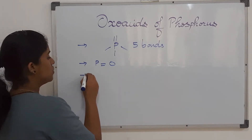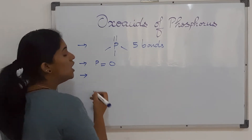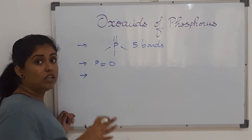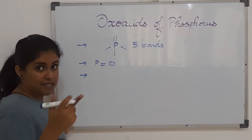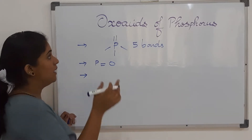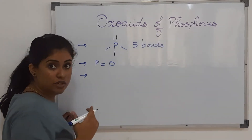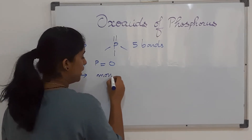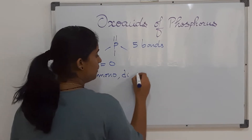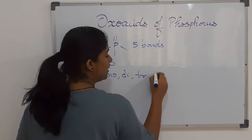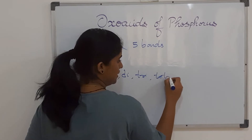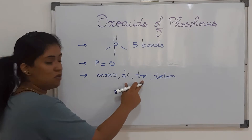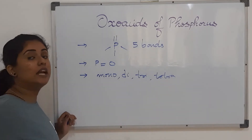The third point concerns basicity, similar to oxoacids of sulfur. Unlike the oxoacids of sulfur where all structures had a uniform dibasic nature with two OH groups, the oxoacids of phosphorus show varying basicity. Their basicity can be monobasic, dibasic, tribasic, or even tetrabasic, meaning they can have one, two, three, or even four OH groups in their structure.